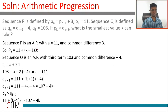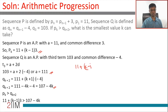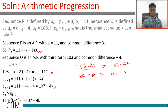The kth term of p is 11 plus (k minus 1) into 3, and the first term of q is 111, so the (k+2)th term is 107 minus 4k. We know 11 plus (k minus 1) into 3 is greater than 107 minus 4k, which gives 3k plus 8 is greater than 107 minus 4k. Bringing like terms together: 7k is greater than 99, so k is greater than 99 divided by 7.